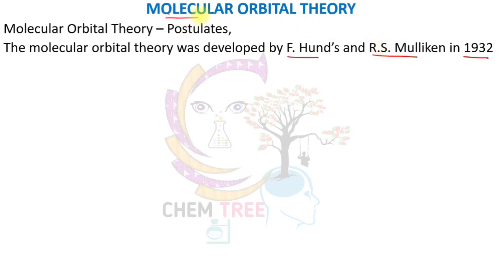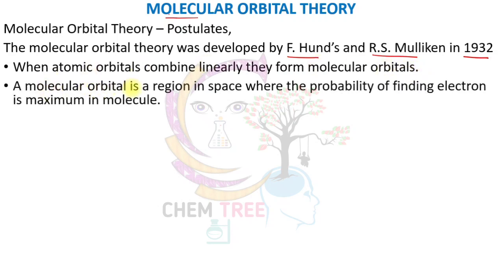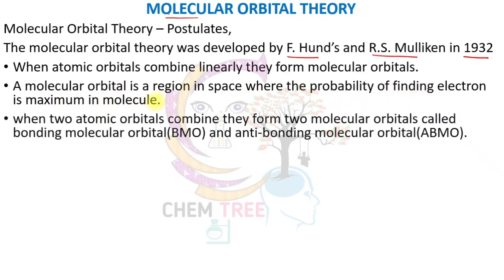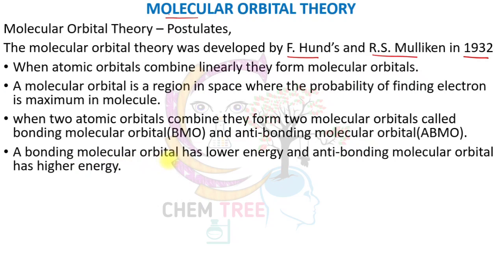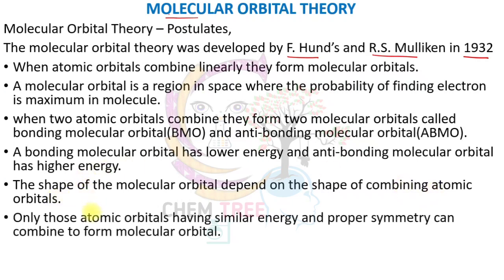Molecular orbital theory has some postulates: when atomic orbitals combine linearly, they form molecular orbitals. A molecular orbital is a region in space where the probability of finding the electron is maximum in the molecule. When two atomic orbitals combine, they form two molecular orbitals — a bonding molecular orbital (BMO) and an anti-bonding molecular orbital (ABMO). BMO has lower energy and ABMO has higher energy. The shape of the molecular orbital depends on the shape of the combining atomic orbitals, and only those atomic orbitals having similar energy and proper symmetry can combine.